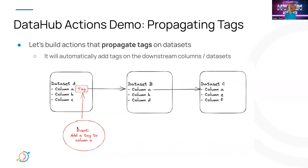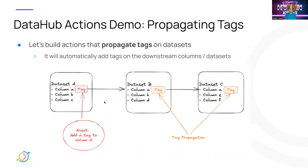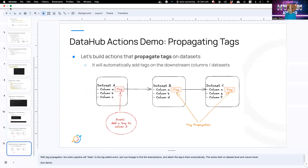I'll show you a quick demo on tag propagation actions. But first, what is tag propagation? Let's say you attached a tag on dataset A, and dataset A has a lot of downstream assets — for example, a thousand downstream datasets. It would be completely inefficient to add tags on all the downstream entities manually. With tag propagation, the action pipeline will listen to the tag-added event, use lineage to find the downstreams, and automatically attach the tag to them.